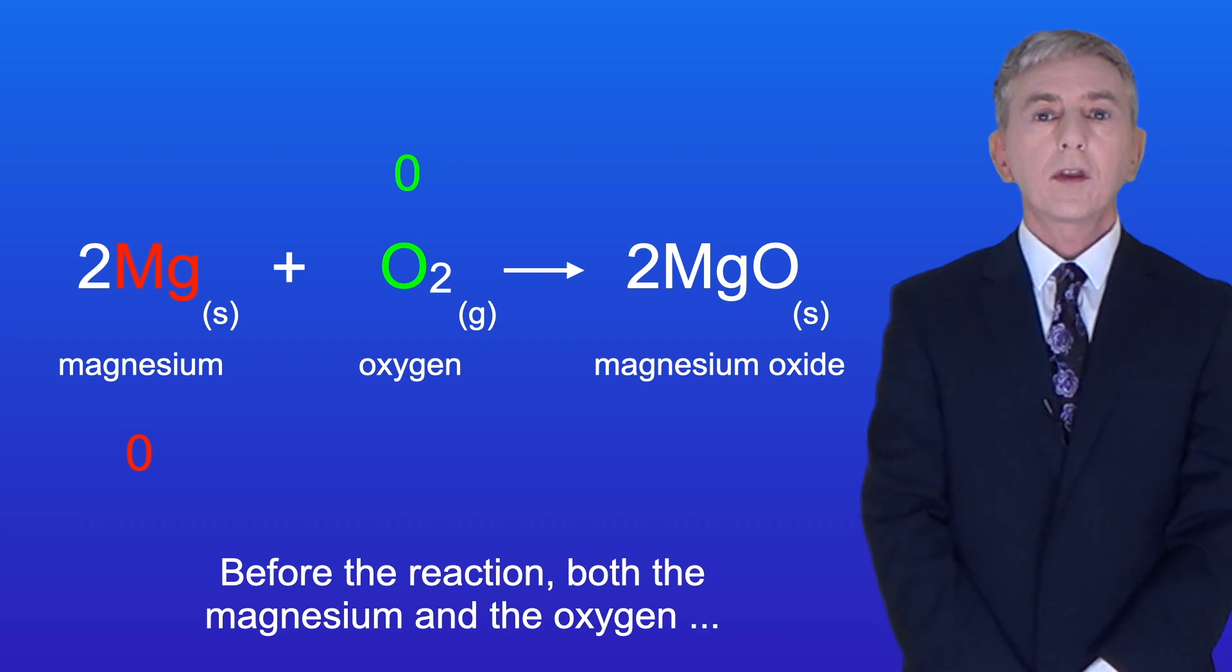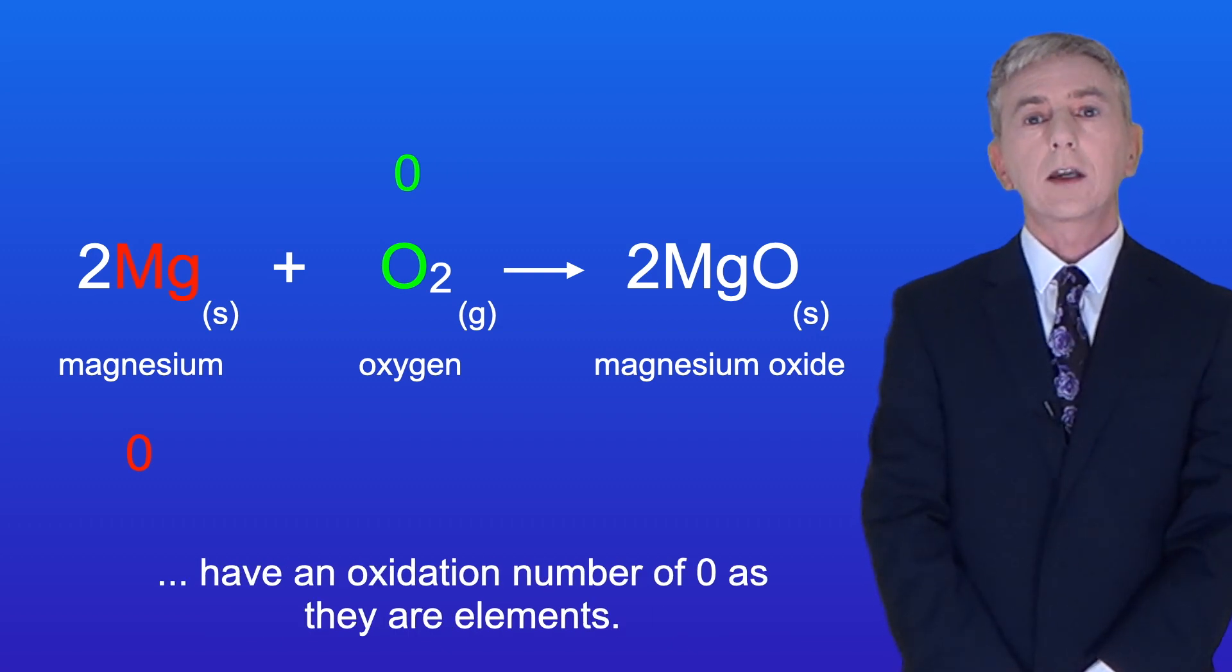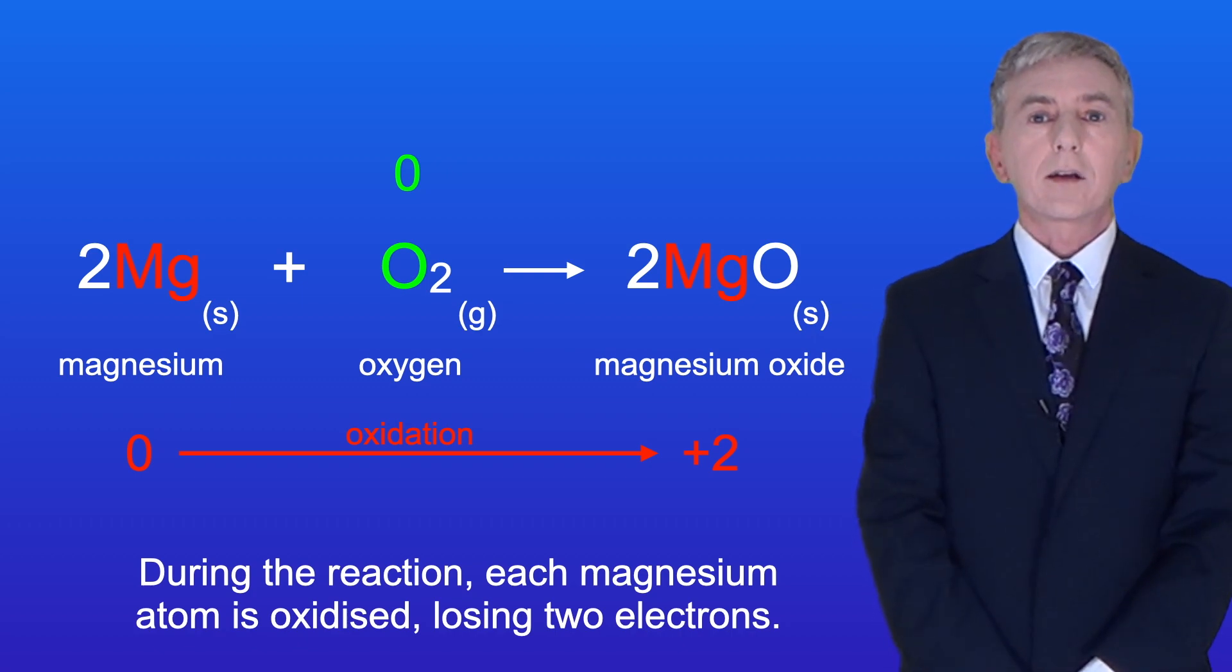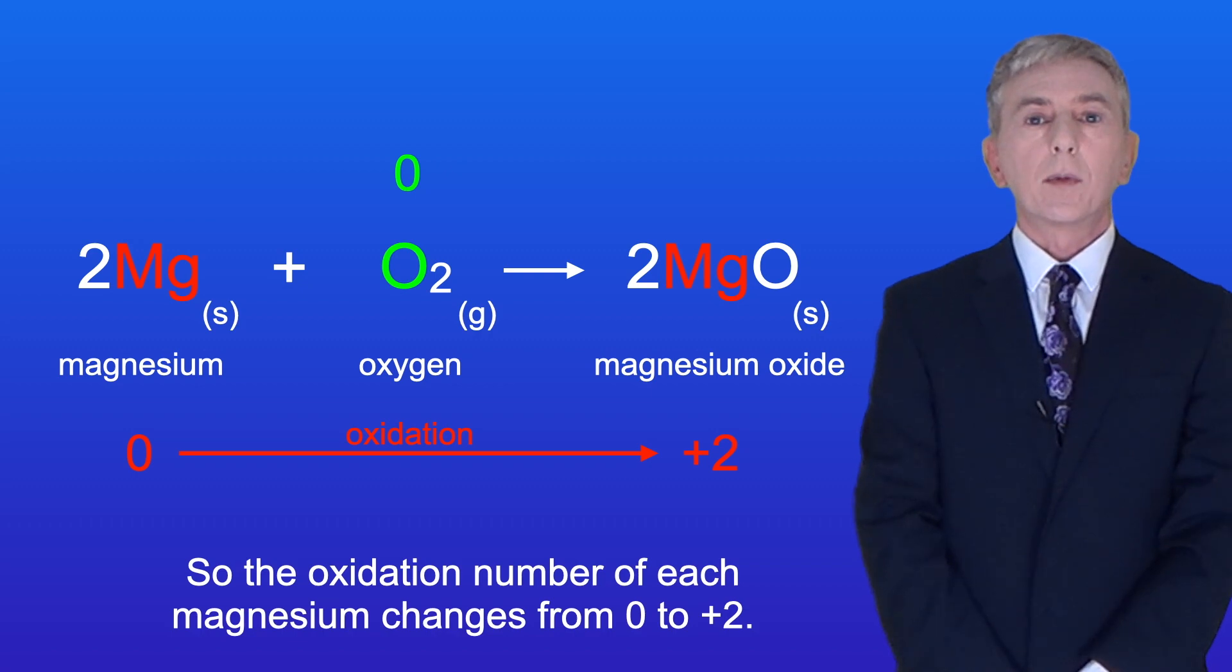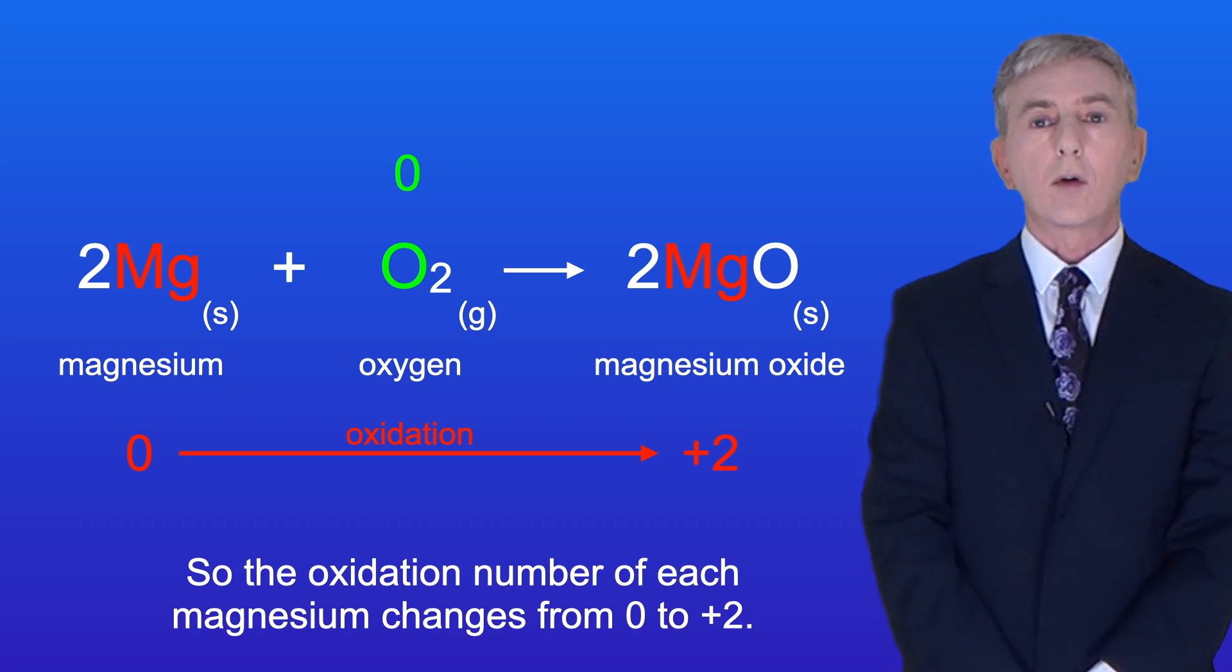Before the reaction, both the magnesium and the oxygen have an oxidation number of zero as they're elements. During the reaction, each magnesium atom is oxidized, losing two electrons. So the oxidation number of each magnesium changes from zero to plus two.